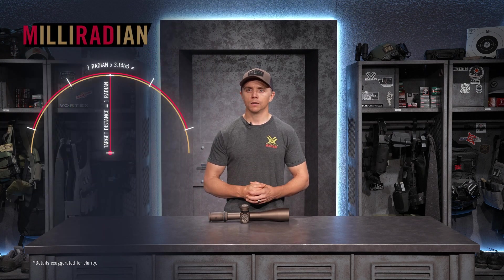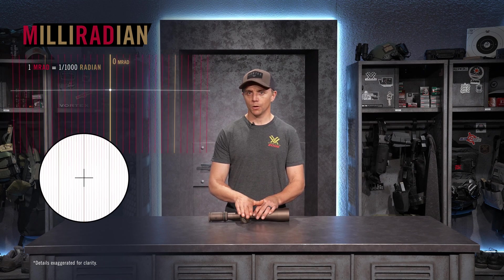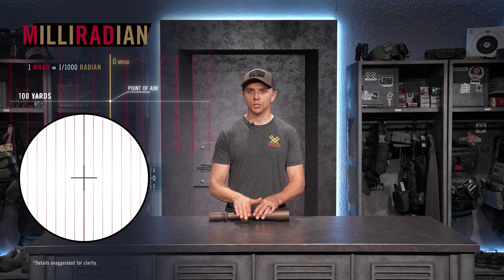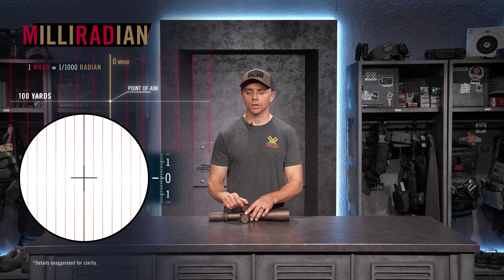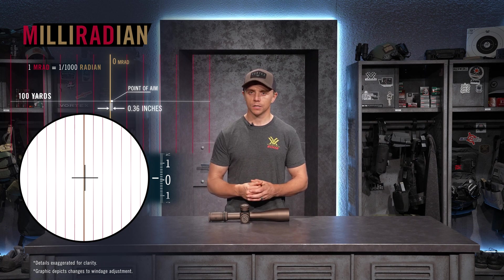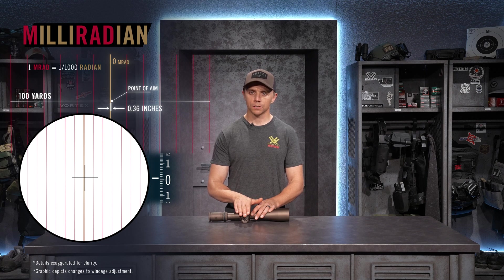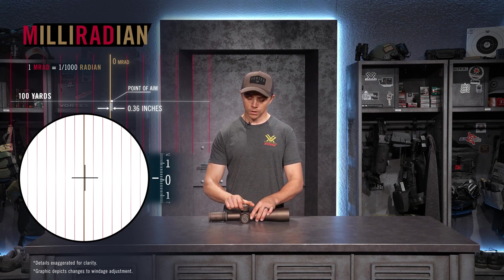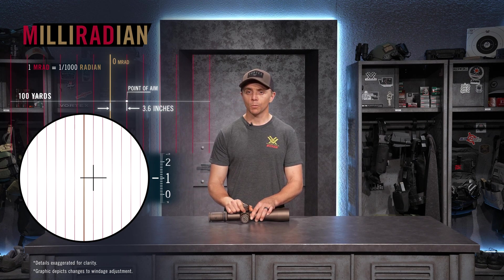Milliradian, or MRAD, is derived from a base-10 system. Common increments are tenth-of-a-mil adjustments — so one click on your elevation or windage turret is a tenth of a mil adjustment, which equates to about 0.36 inches at 100 yards. If you dial an entire mil — about 10 clicks — that's going to be 3.6 inches at 100 yards.